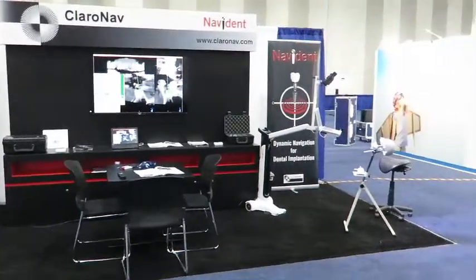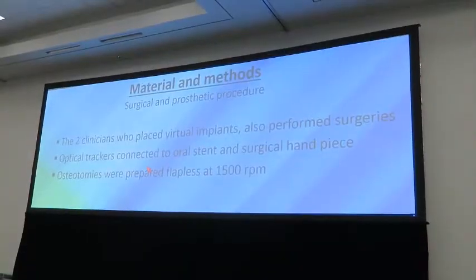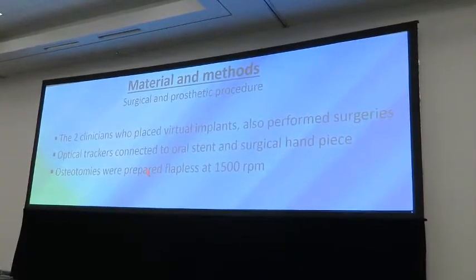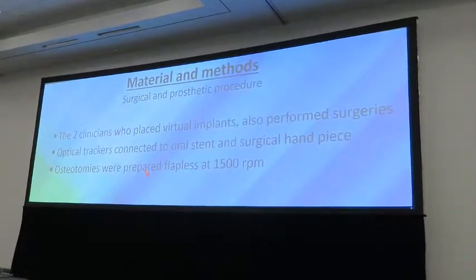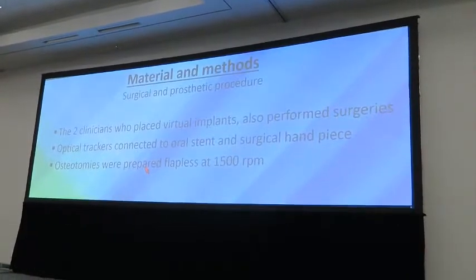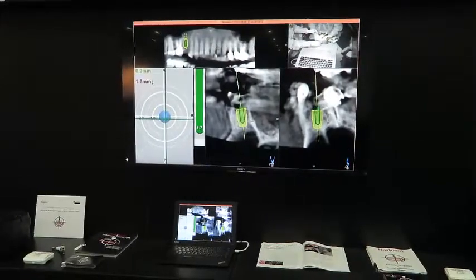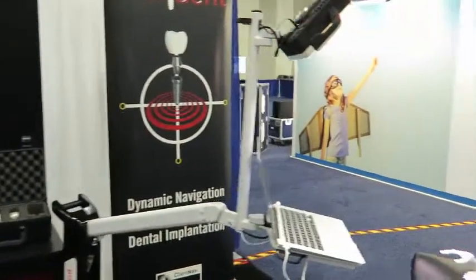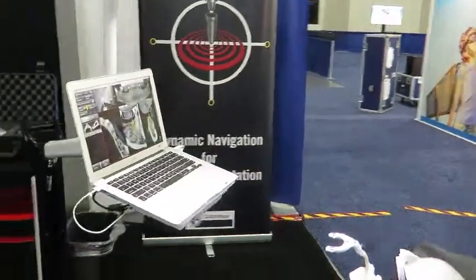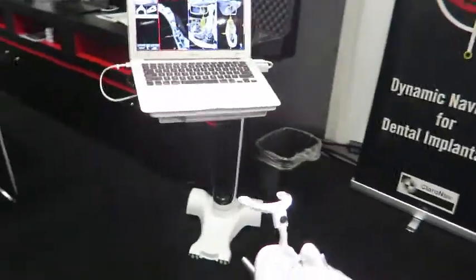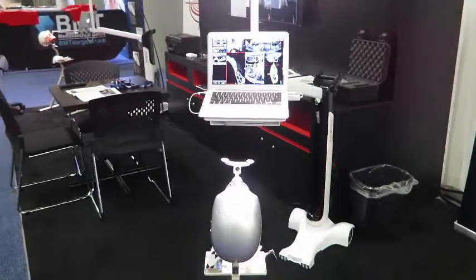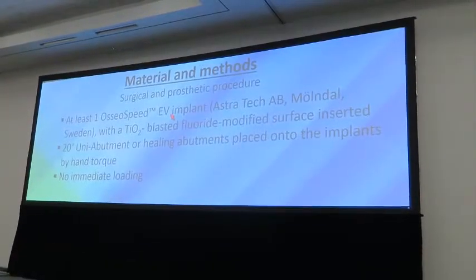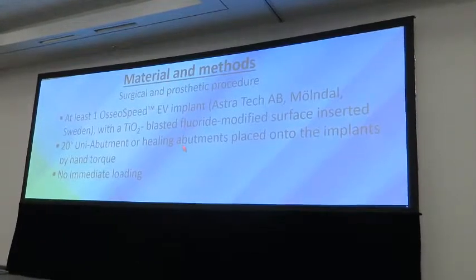The optical trackers were connected to the handpiece and to the patient. The osteotomies were prepared flapless at 1,500 RPM. At least one bone-level implant was placed. Implant cover screws were placed as deemed fit for the situation, and no immediate loading was done.